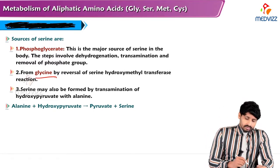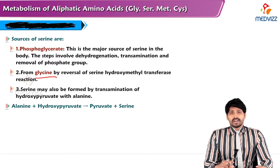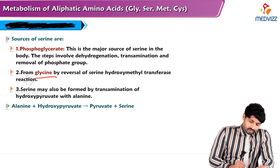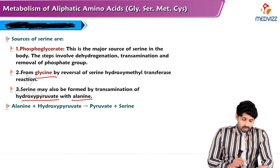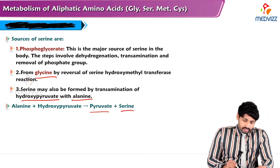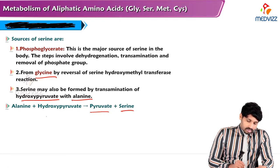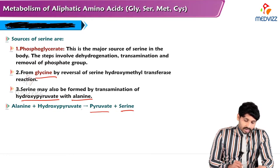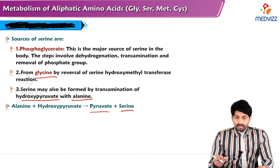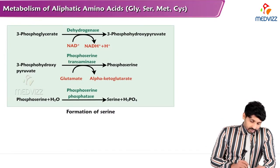Second, as mentioned, glycine can form serine by reversal of the serine hydroxymethyltransferase reaction. Third, serine may also be formed by transamination of hydroxypyruvate with alanine: alanine plus hydroxypyruvate gives pyruvate and serine, because alanine accepts the hydroxy group from hydroxypyruvate to form serine, and after donating its hydroxy group, pyruvate forms prepyruvate.